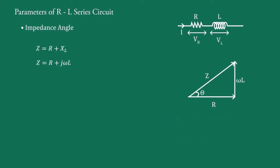It is calculated using trigonometric relation. tan theta equals the ratio of opposite side to the nearby side of the angle theta. From this impedance triangle, tan theta equals omega L upon R. And therefore, theta equals tan inverse of omega L upon R. This is the impedance angle of the series RL circuit.